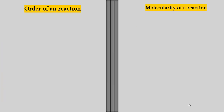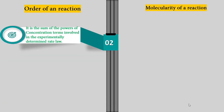Differences between order of reaction and molecularity: Order is the sum of the powers of concentration terms involved in the experimentally determined rate law. Molecularity is the total number of reactant species involved in an elementary step. Order can be zero, fractional, or an integer number. Molecularity is always a whole number only. Order is assigned for the overall reaction, while molecularity is assigned for each elementary step of the mechanism.